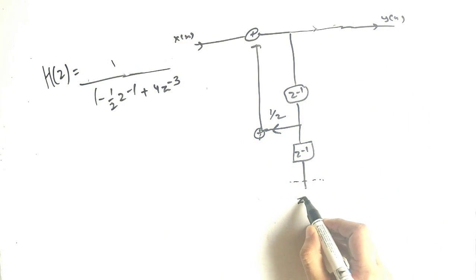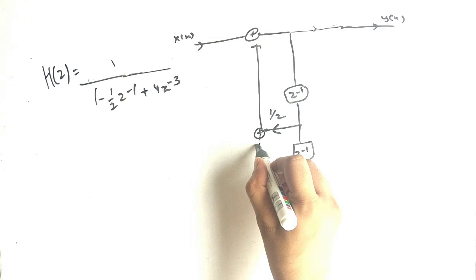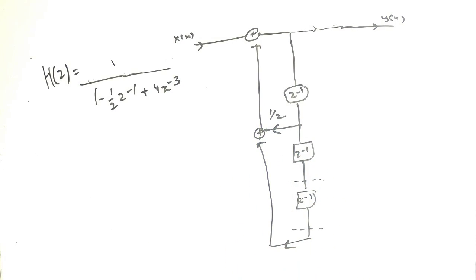But now we have to add one more delay. Now here we get z raise to minus 3 term and this will add to this, and the multiplier is 4. So the pole has the negative of the multiplier, that is minus 4. So this is the answer.